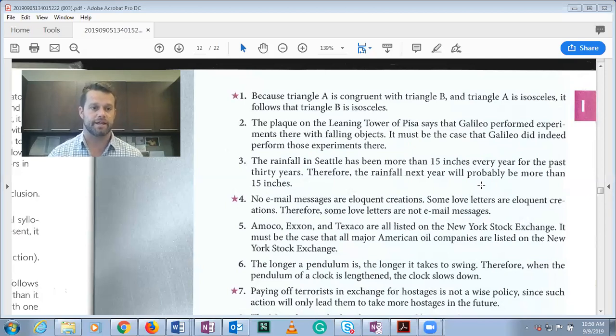But that being said, it doesn't have to happen. So it could be the case that next year is a crazy year and for some reason Seattle goes through a drought or something like that, and then it wouldn't have 15 inches of rain, which would mean there's a true premise and a false conclusion. You can't have that in a valid deductive form.